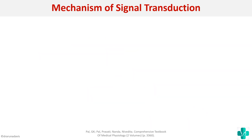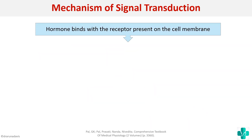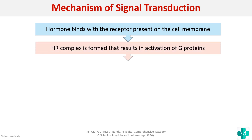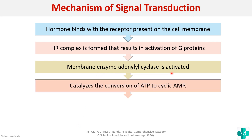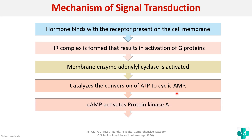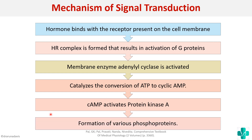The same mechanism can be written as a flowchart. When the hormone binds to the receptor on the cell membrane, the hormone receptor complex is formed, resulting in activation of G proteins. This activates the membrane enzyme adenylyl cyclase, which catalyzes the conversion of ATP to cyclic AMP. This causes activation of protein kinase A, leading to formation of various phosphoproteins. This is the mechanism of signal transduction.